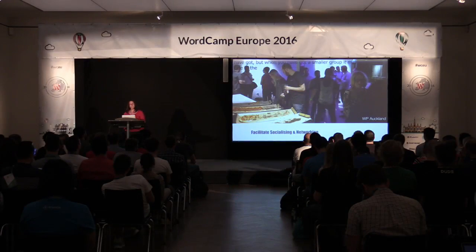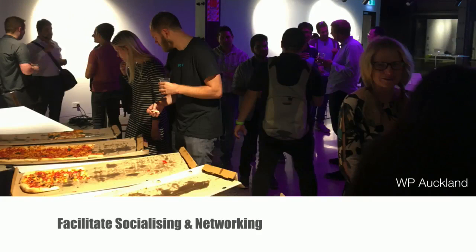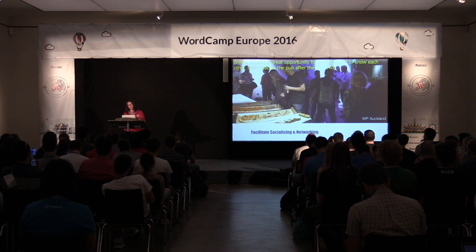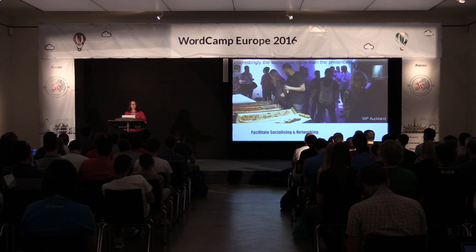One of the ways to help facilitate welcome and bring people together is to provide food and drink for a social time before we get into the meetup programme itself. At our Melbourne main meetups, we start the evening with half an hour of social catch-up — we have pizza, we have drinks. It creates a great opportunity for people to get to know each other in a relaxed context. We also head to the pub after the event for more social time. The social time, more than the presentations, has proven to be a really valuable space for people to forge great friendships and collaboration opportunities.